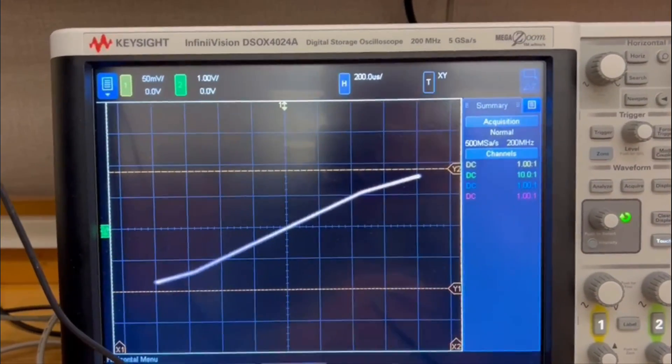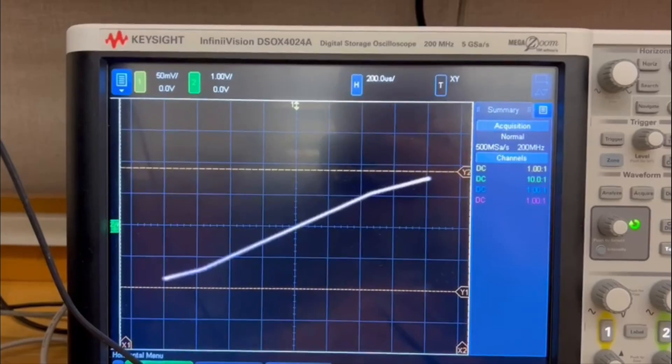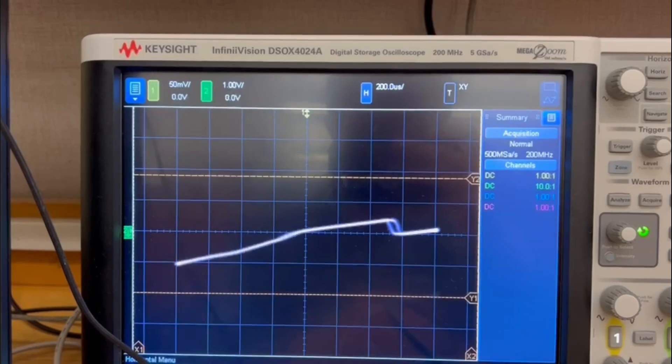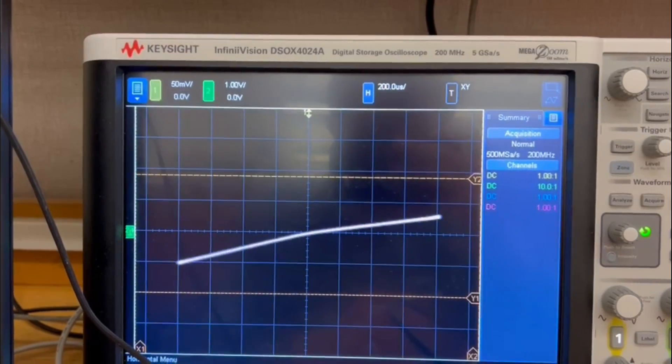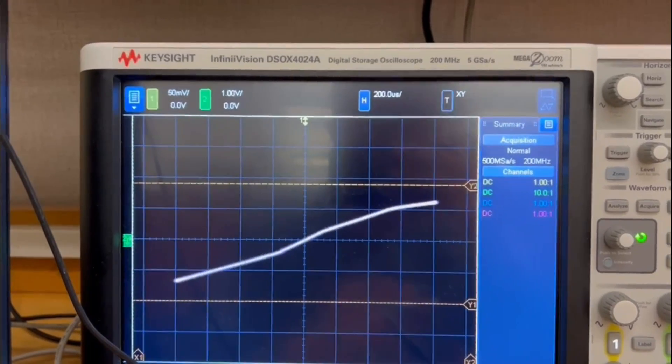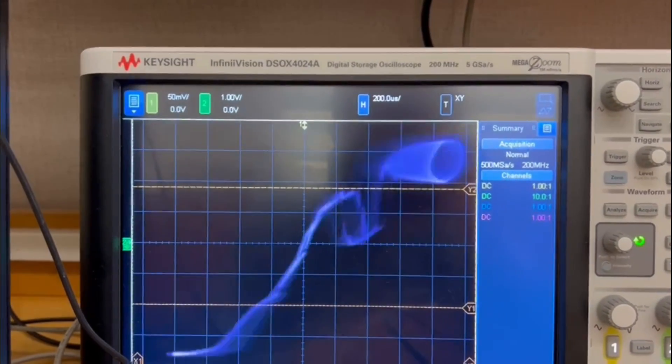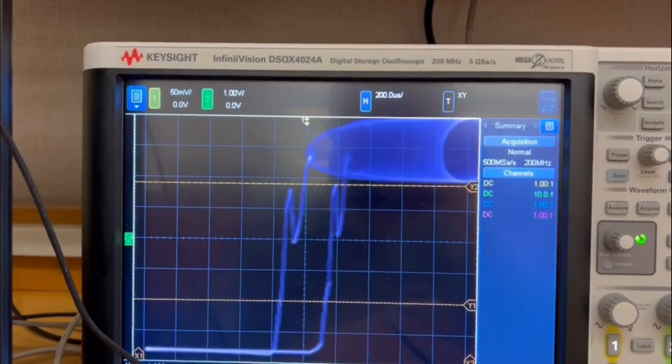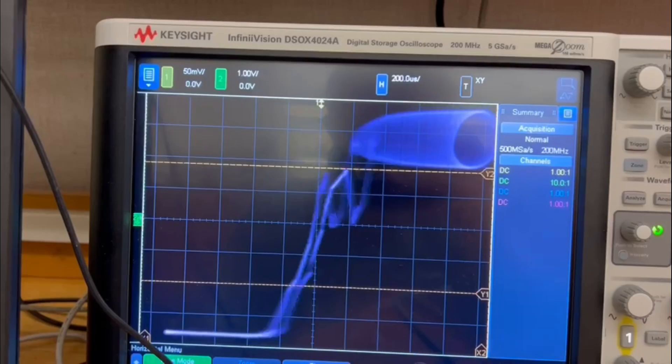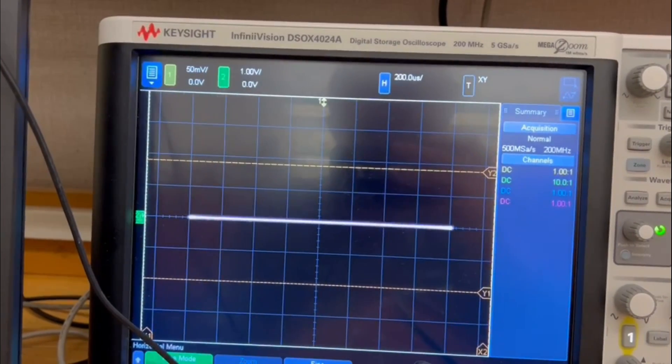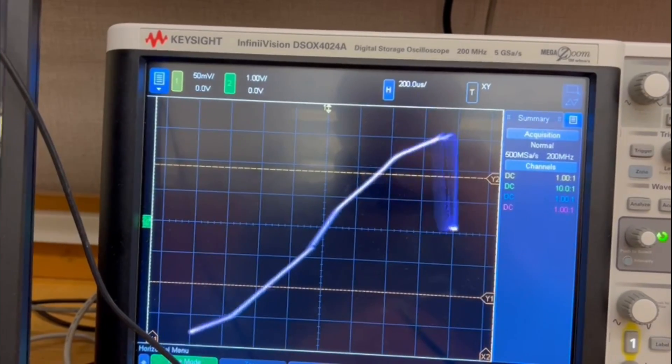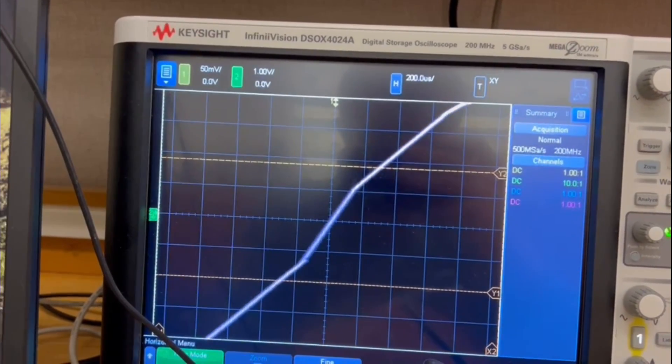So the lower gain, and then if we turn the supply pot, see, you get the weird discontinuity there, and then it flattens out. And this is the volume pot. And then the supply pot. So you can see it.